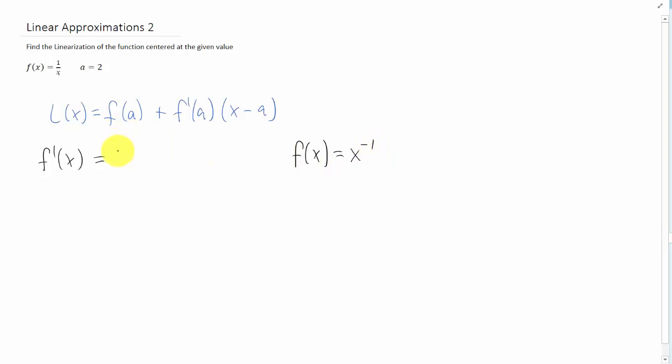Then, to take a derivative of that, we just use the power rule, which gives us negative x to the negative 2 power. And maybe a more convenient form for that is negative 1 over x squared.